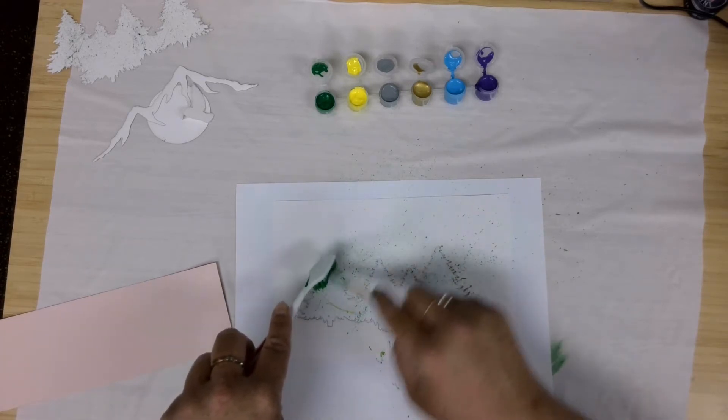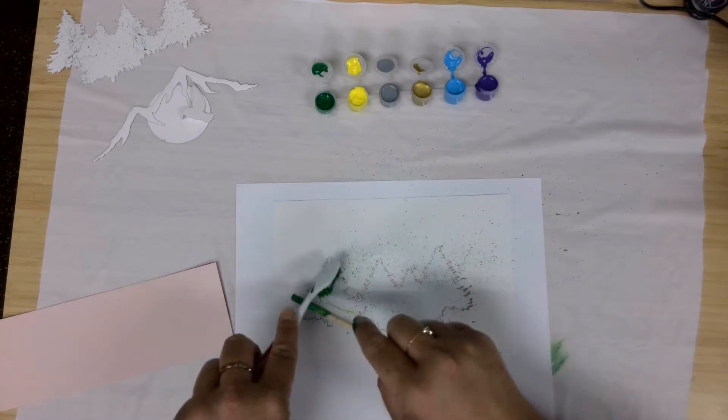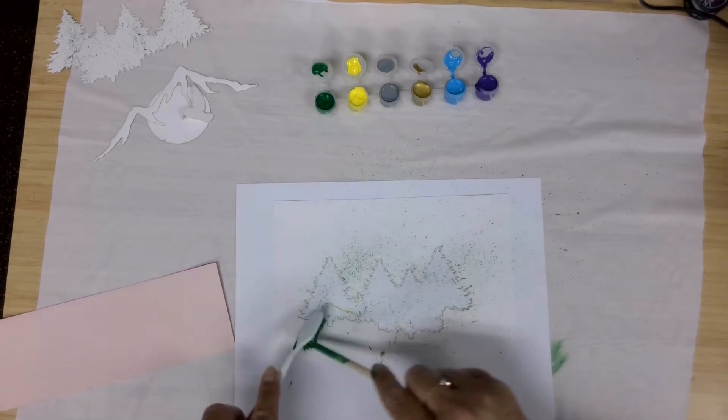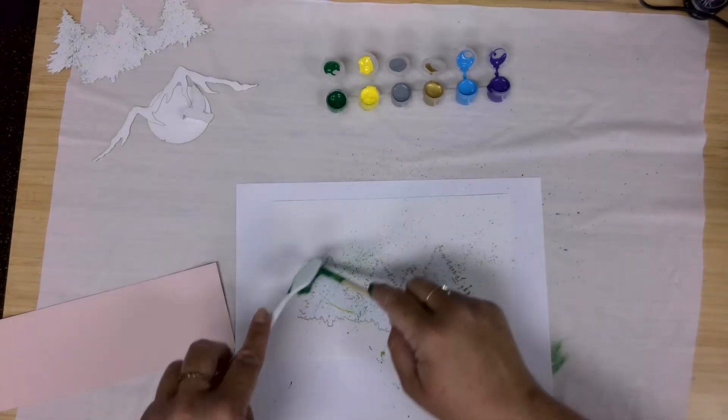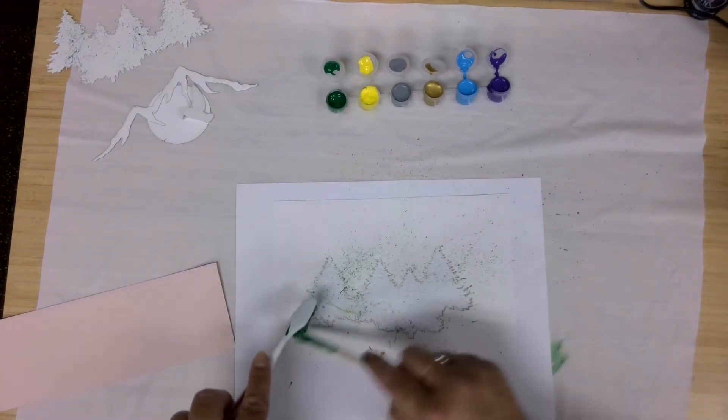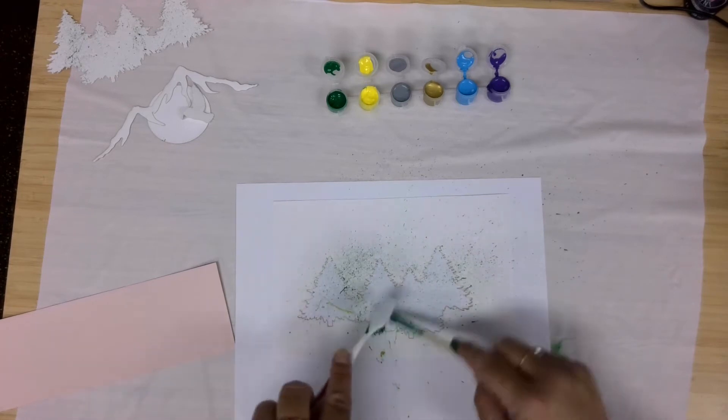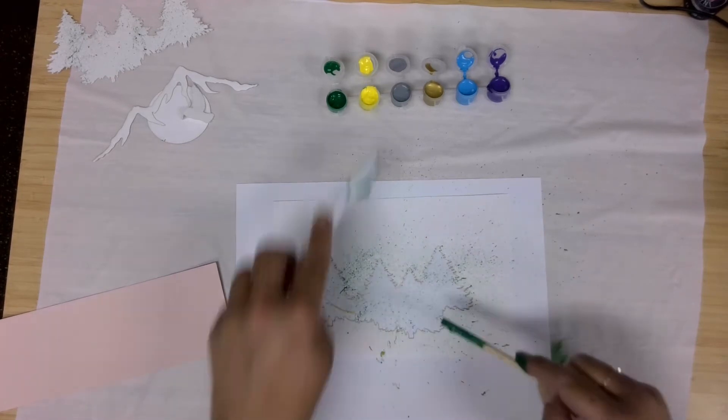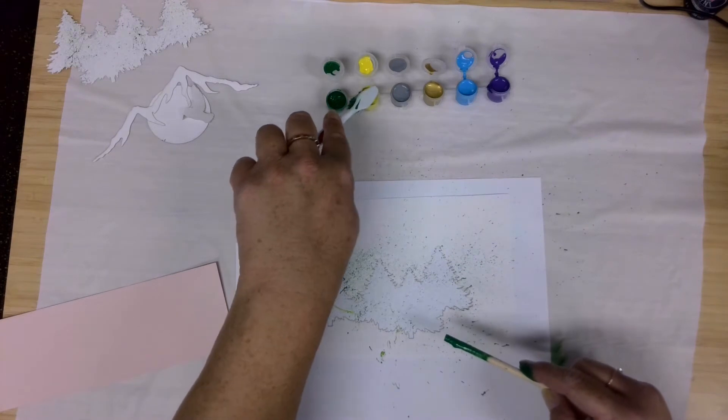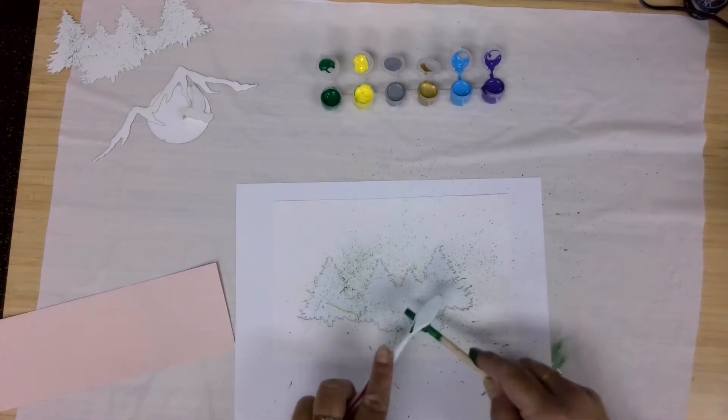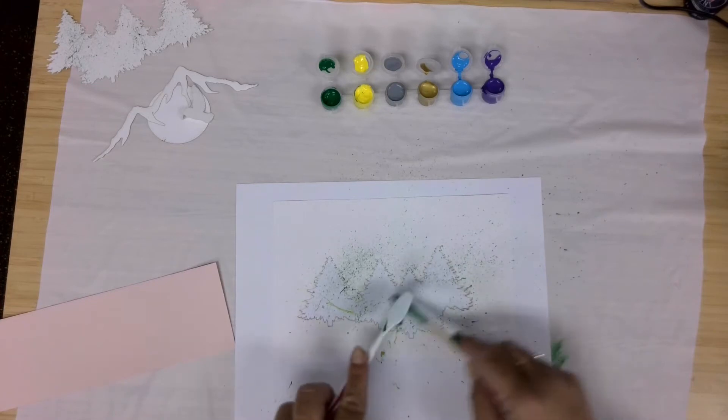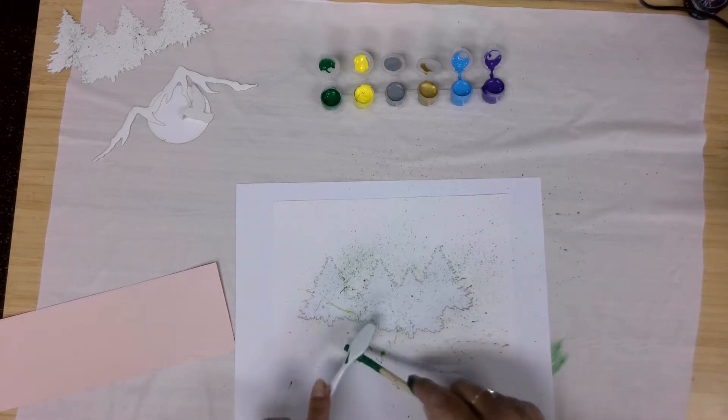You can also go back and forth. Let's go through yellow. As it mixes in with the green it's actually going to give me a whole other color of green in there.